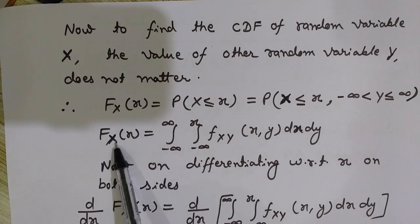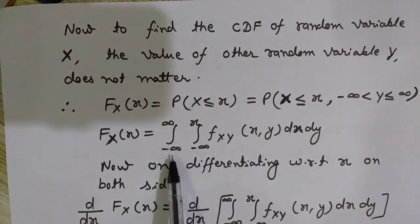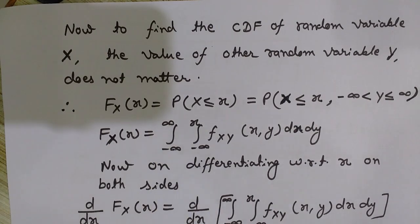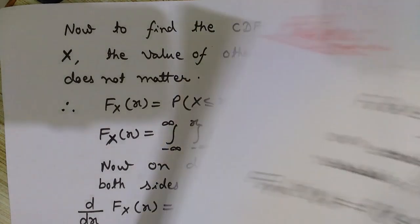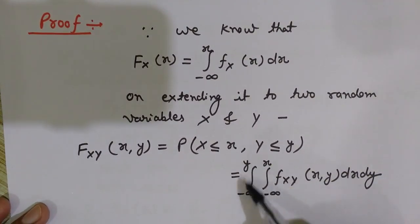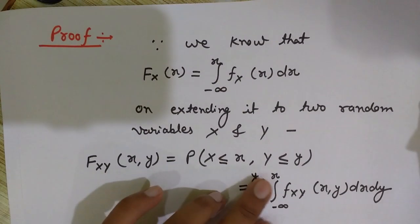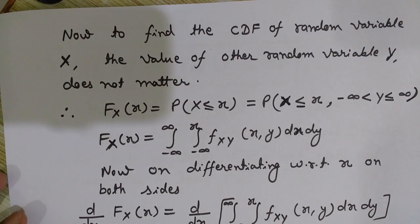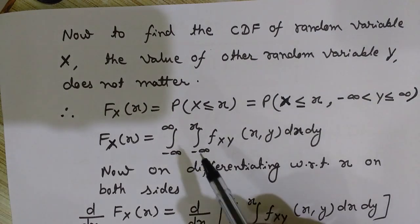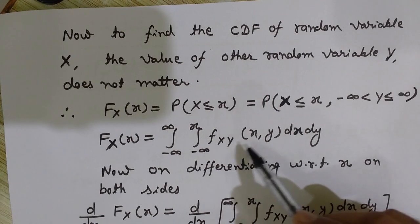From the previous formula, the cumulative distribution function can be written with the range of y from minus infinity to infinity — since we are not depending on y we integrate over its full range — and for x, from minus infinity to x, giving us the integral of f(x, y) dx dy.